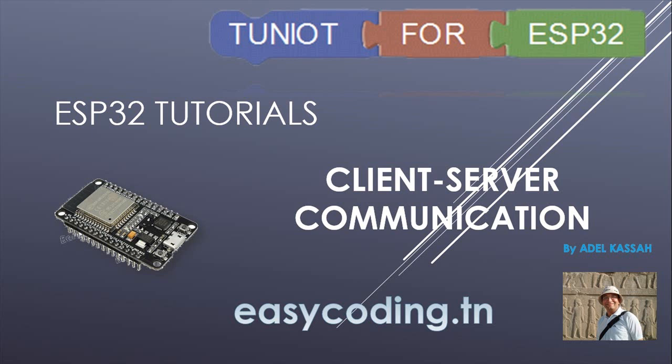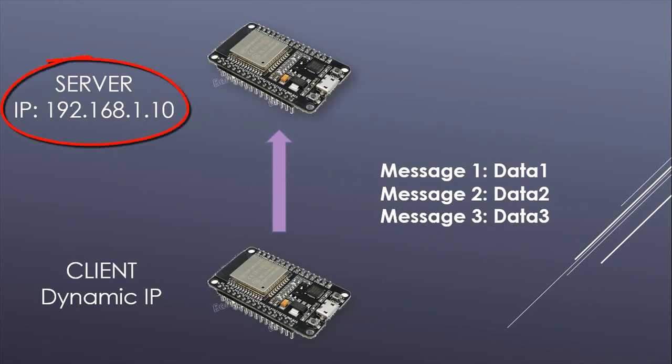Hello and welcome to this new tutorial. This video is part of a playlist — you will find the link in the description below. We already saw how to make an ESP32 run as a web server. Today we will make two boards communicate together. This is called client-server communication. The server with the IP address 10 is listening for any HTTP request. The client with a dynamic IP address will send every five seconds an HTTP request with some information. As a test, I will send the text data 1, data 2, and data 3.